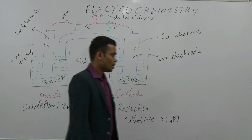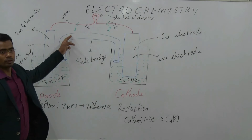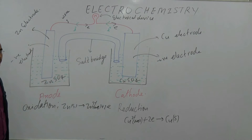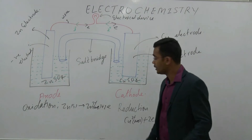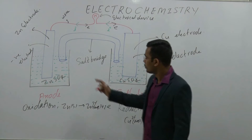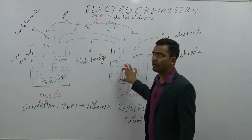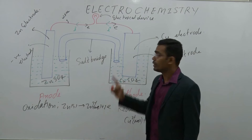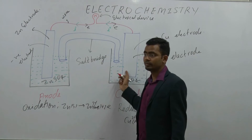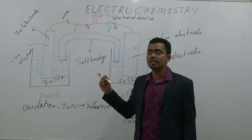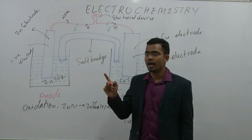Now write down: selection of electrolyte for the salt bridge. Which type of electrolyte is required? During the reaction, cations come into solution at the anode and anions come into solution at the cathode. At the same time, you have to neutralize both the cation and the anion. This means the electrolyte must have the same velocity of cation and anion.